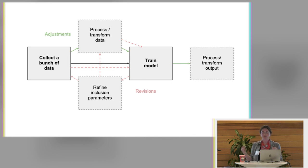But then there are some other kind of secondary steps that might happen along the way. So you might collect a bunch of data, make adjustments to it, do some pre-processing transformation of that data before training a model. And then when you train that model, you might find actually that it has not created at all what you intended it to. And that you need to refine some inclusion parameters. And then either go back to the drawing board of collecting data or reconsider how you're processing and transforming that data. And then once you've trained your model, you might also want to apply some processes or transformations to the output of that model.